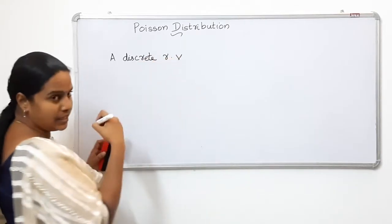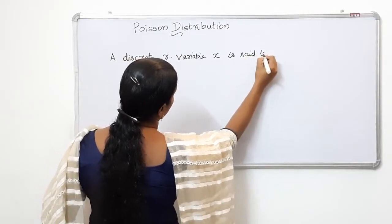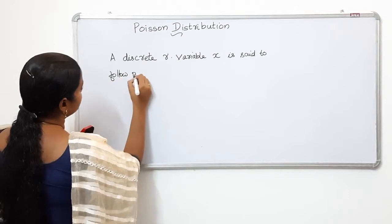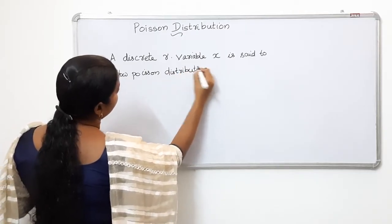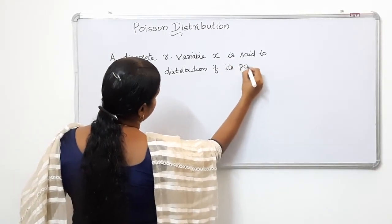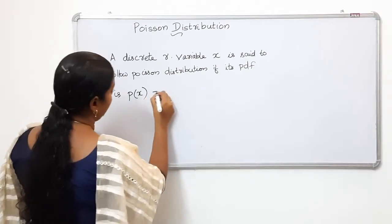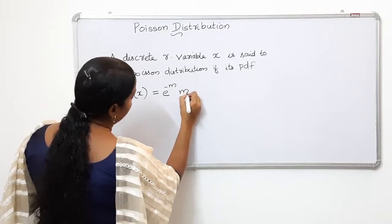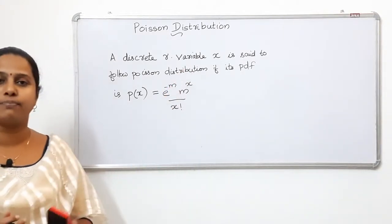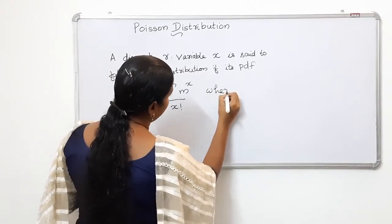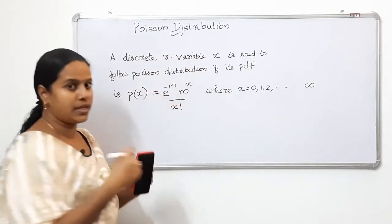A discrete random variable x is said to follow the Poisson distribution. If its PDF — probability density function — is: P of x equals e raised to minus m, times m raised to x, divided by x factorial. Here x takes values 0, 1, 2, 3, etc., up to infinity.